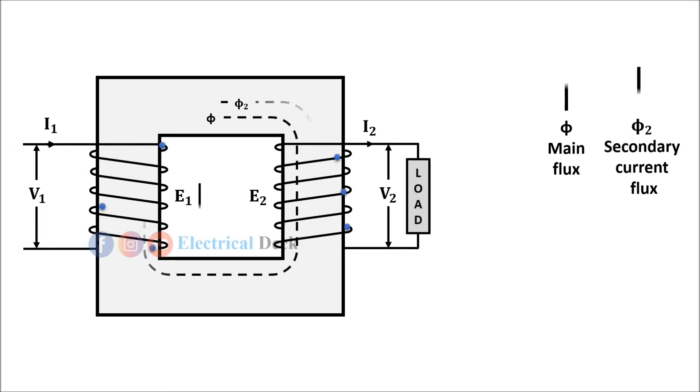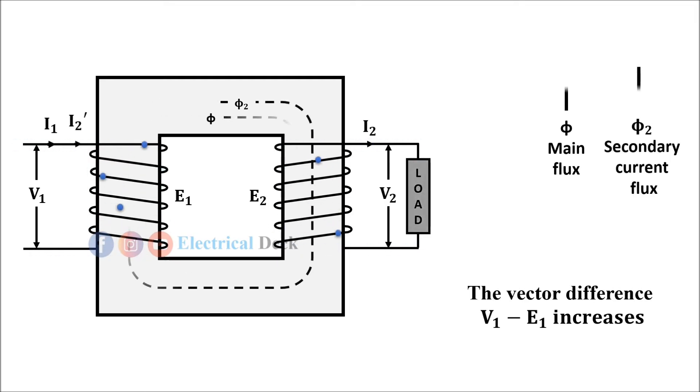Hence the vector difference V₁ minus E₁ increases, due to which primary draws more current from the supply. This additional current I₂' drawn by the primary is due to the load, hence it is called load component of primary current.